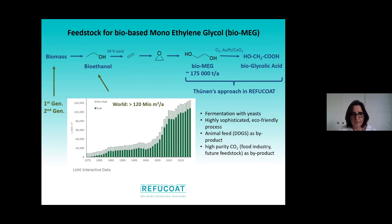We end up with the so-called bio-monoethylene glycol, which is currently produced in about 175,000 tons per year — this is the material used for Coca-Cola's plant bottle. So this is our feedstock, and we carry out selective oxidation to produce bio-glycolic acid.